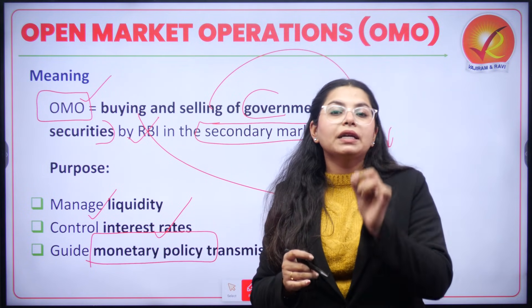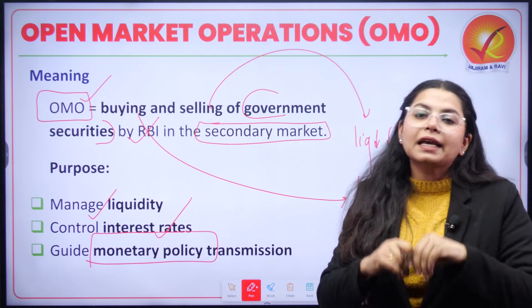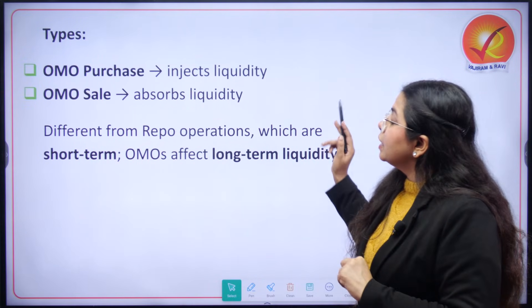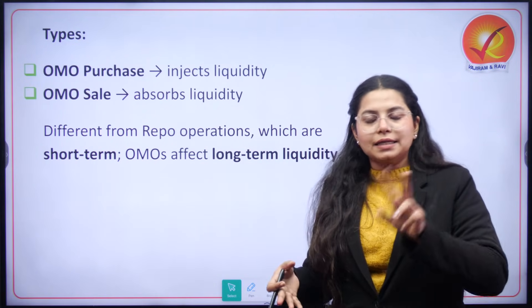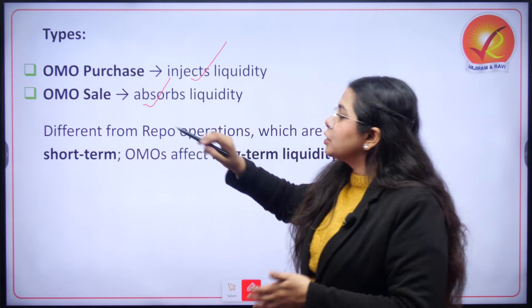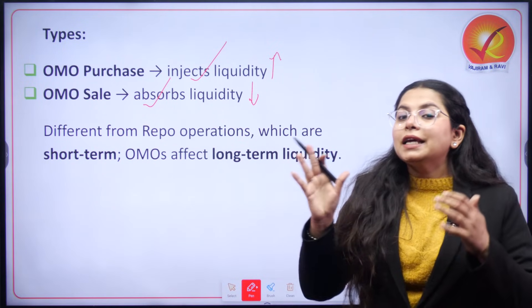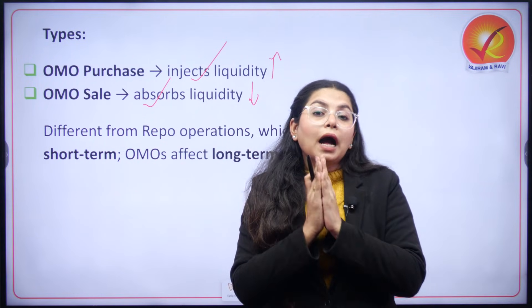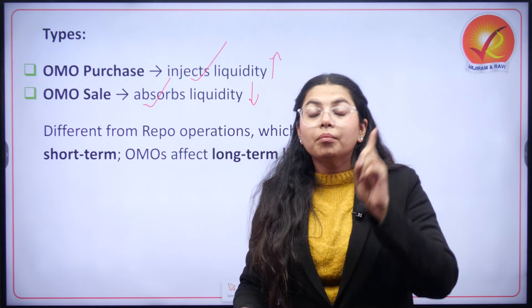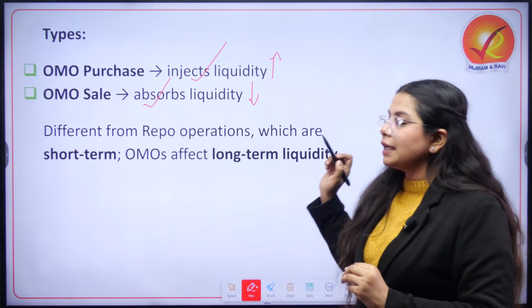Recently, the repo rate has been cut by 25 basis points — can you tell me in the comment section what is the present repo rate taken up by RBI at the neutral stance? When talking about OMOs — open market operations — there are two types: OMO purchase that will increase liquidity, and OMO sale that will absorb liquidity. They have a marked difference from how repo rates impact liquidity, because repo rate impacts liquidity in the market in the short term, but government securities have a long-term impact in terms of liquidity in the market.